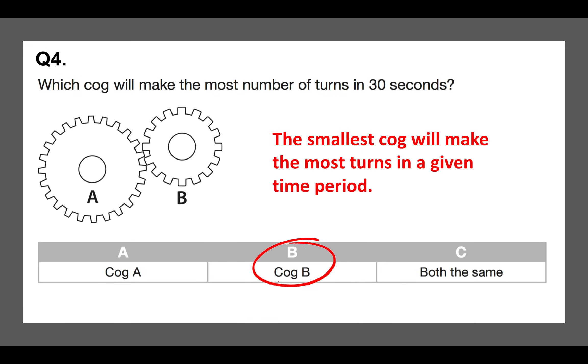And the answer is because the smallest cog will make the most turns in a given time period, because it's smaller. And if you've got cogs in this kind of question that are similar in size and one looks maybe that it's smaller, just count the number of teeth. Just quickly count the number of teeth on the cogs and the smallest one will spin the most turns in a given time period.